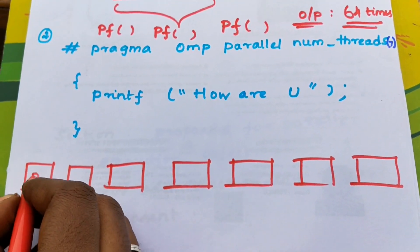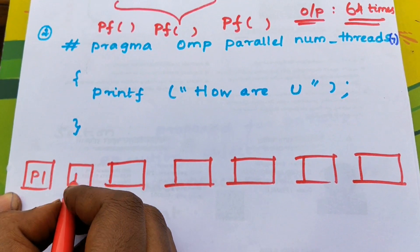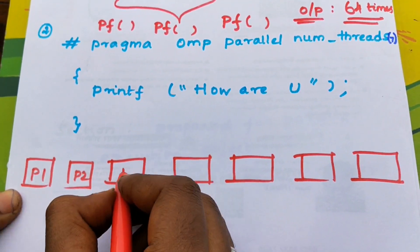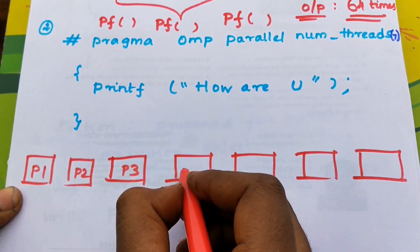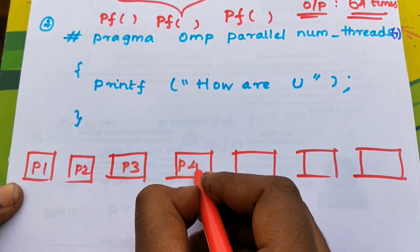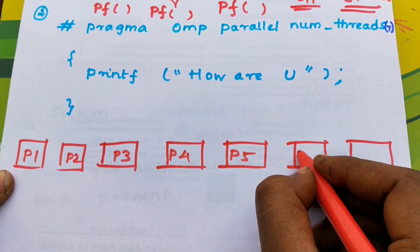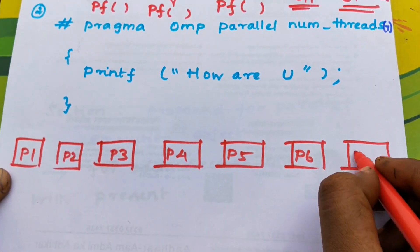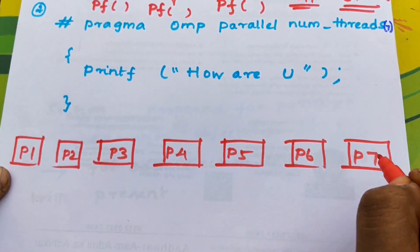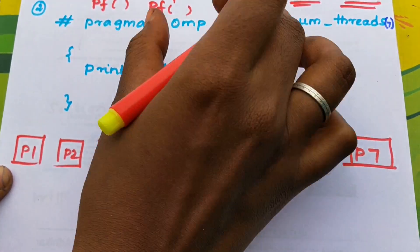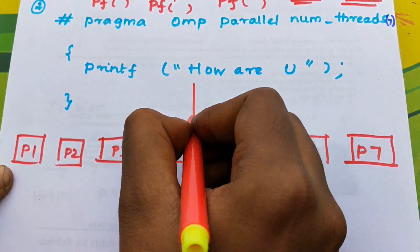So we have processor 1, processor 2, processor 3, processor 4, processor 5, processor 6, and finally processor 7. Each processor executes the single instruction in parallel.